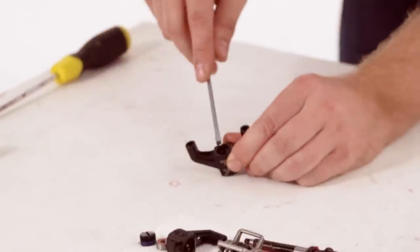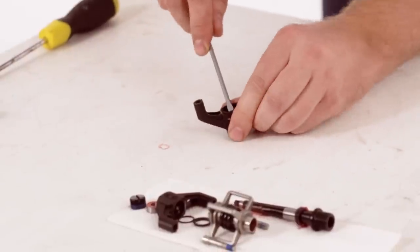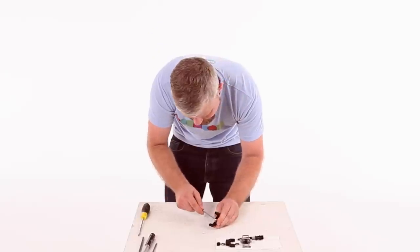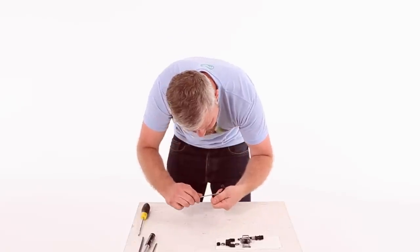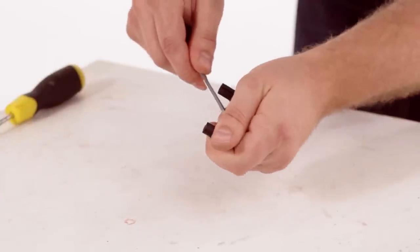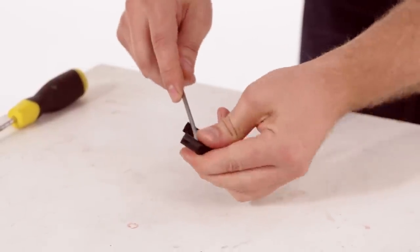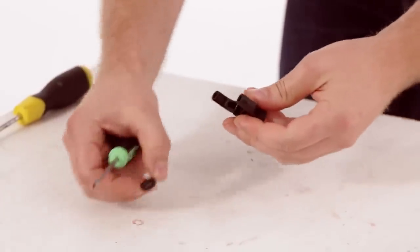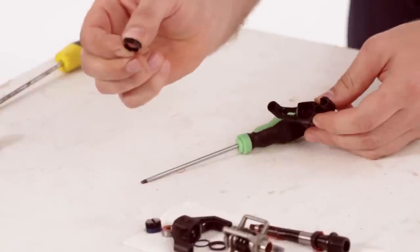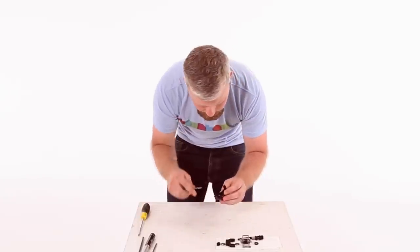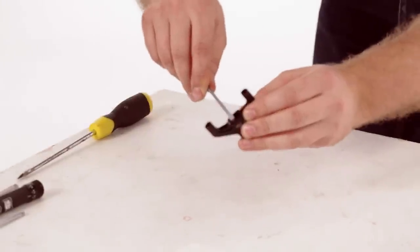And then grab the other half and do the same again. This bush is a little bit deeper. That takes a bit more effort to remove. Do it carefully otherwise you'll scratch your pedal body. You can see that's a little bit deeper than the other one. And behind that should lie an o-ring.